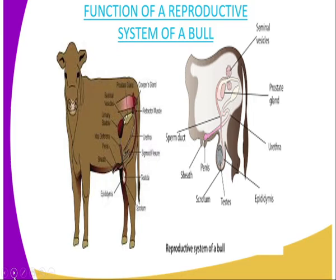Then we have the urethra. The urethra allows the passage of urine when the animal is urinating. On the other hand, the urethra is also where the sperm from the sperm duct normally passes through. Then we have the sperm duct, which allows the passage of the semen — the fluid secreted by the seminal vesicle together with the prostate gland — and it also contains the sperm inside.